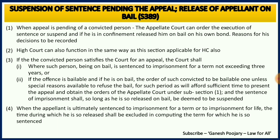Section 389 discusses about suspension of sentence pending the appeal and release of the appellant on bail. Subsection 1 says if there is an appeal pending of a convicted person and he is under confinement, the Appellate Court can release him on his own bond, but the reasons for the same shall be recorded by the Appellate Court. Even the High Court can also function in the same way, as section 389 is applicable to the High Court also. Subsection 3 says when a convicted person satisfies the court for an appeal, he shall get bail under two circumstances: one, when he is sentenced to imprisonment for a term not exceeding three years, or if he has committed a bailable offense. If the court is rejecting bail under these two circumstances, it needs to give the reasons on record — that is very important.